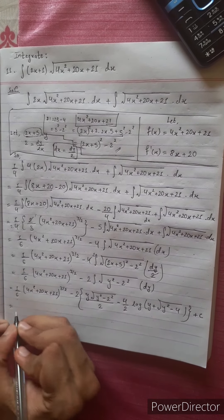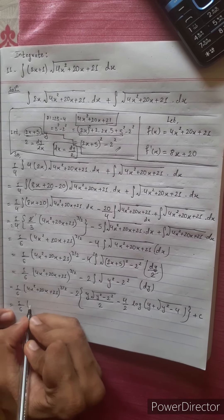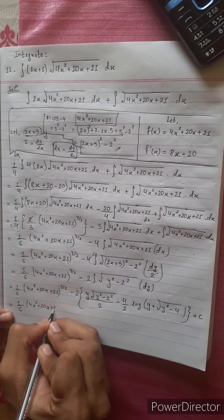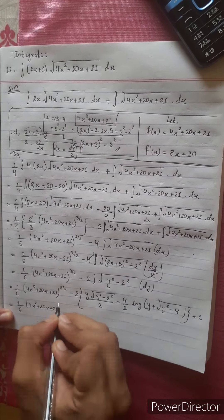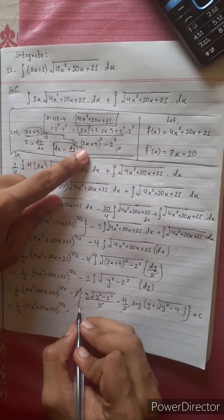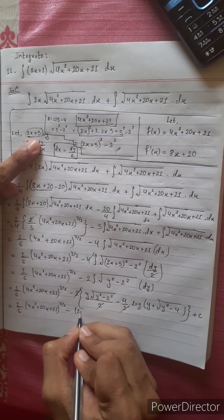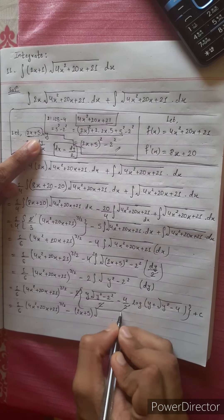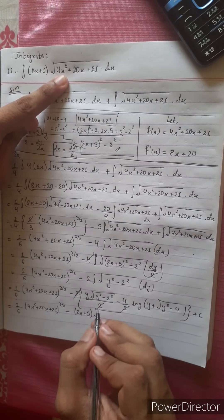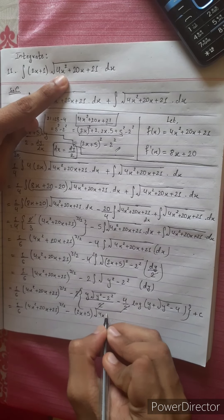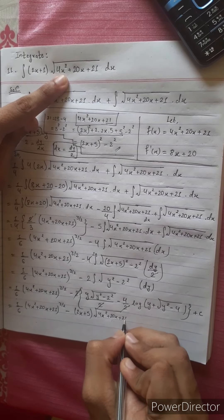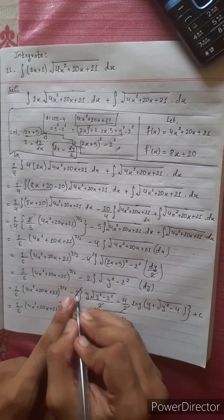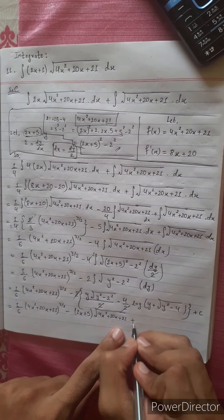So the result is 1/6 times 4x squared plus 20x plus 21 to the power 3/2, minus — now 2/2 times 2/2 times 2/2, so we multiply. We get (2x + 5) times under root of y squared minus 2 squared divided by 2, and then plus 4 times log of (2x + 5) plus under root of y squared minus 4.